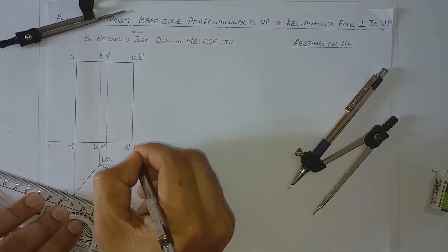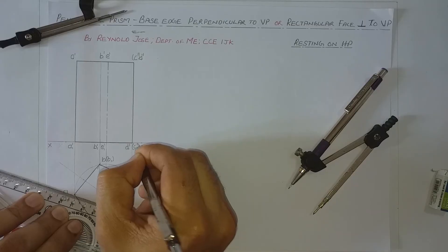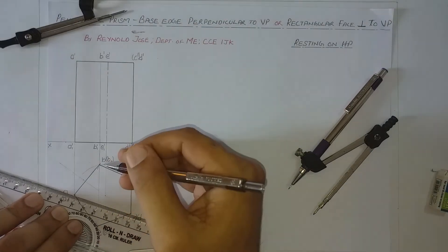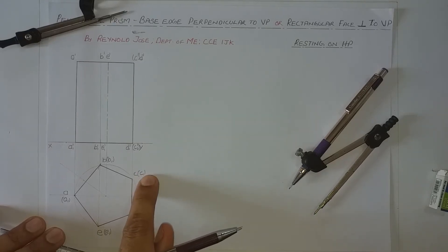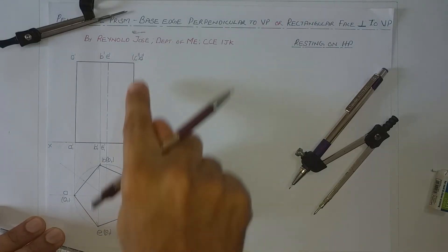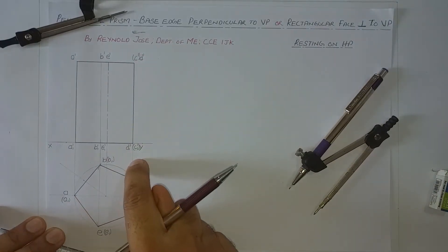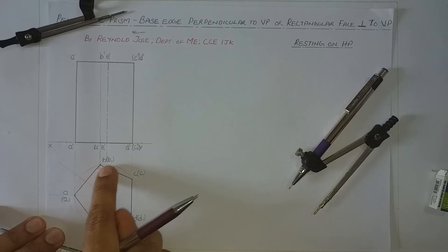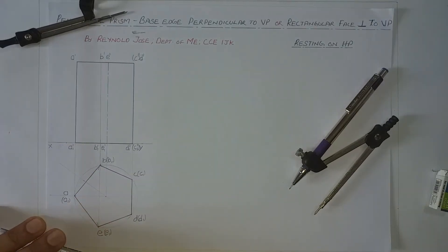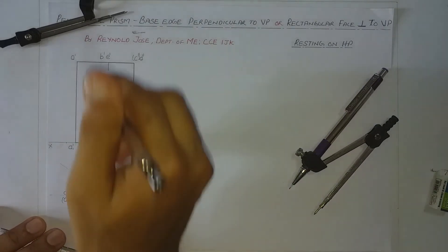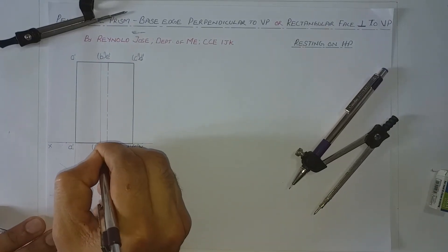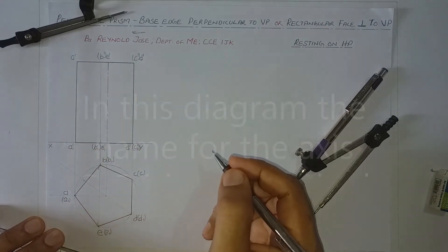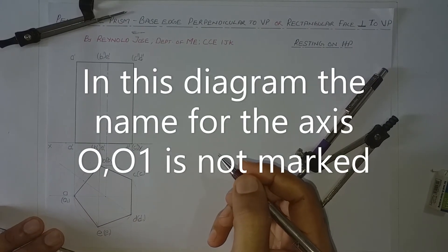Similarly, B and B1 are on the rear side when observing from the front direction, so B' and B1' will also be invisible. Now let us draw the lateral edges in the front view. We already have AA1. Next is BB1, but B' and B1' are invisible, so the lateral edge connecting B' and B1' will also be invisible.